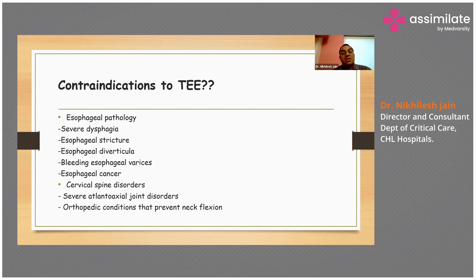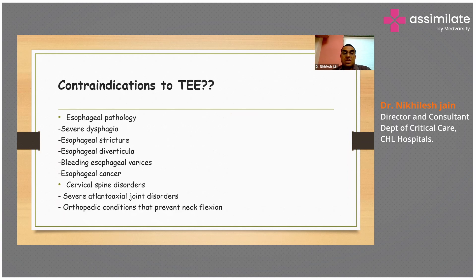Contraindications to TEE include esophageal pathologies such as dysphagia, stricture, and diverticulosis. Bleeding varices or oesophageal cancers are also contraindications, as are cervical spine disorders involving the atlantoaxial joints or any orthopaedic conditions which can prevent flexion of the neck.